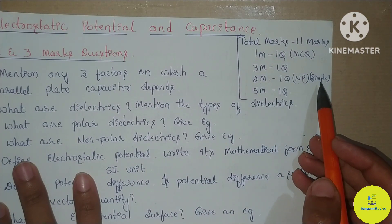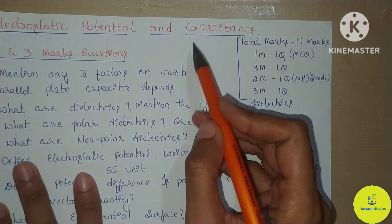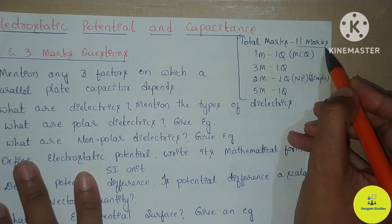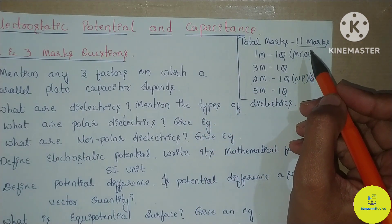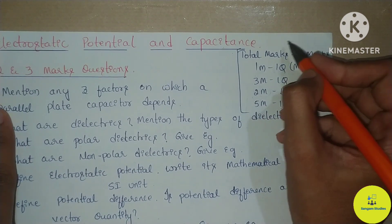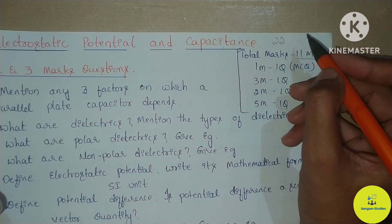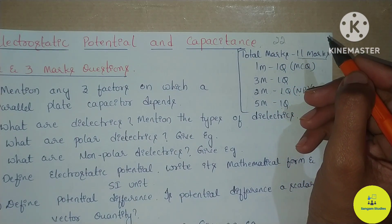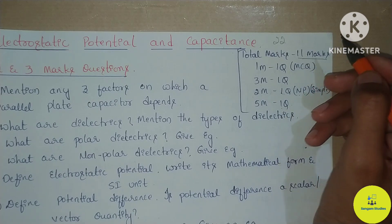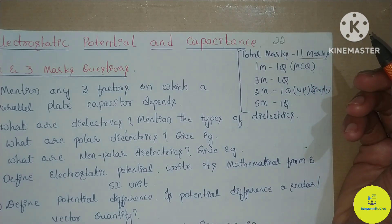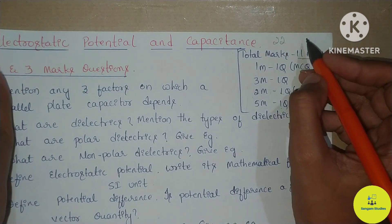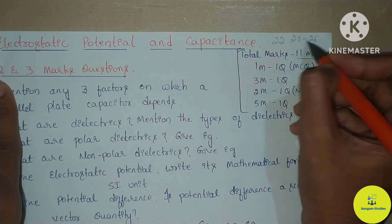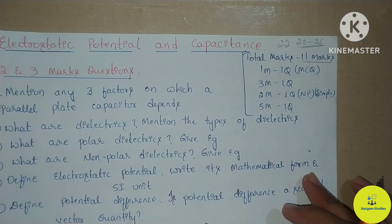According to your final examination, Electrostatic Potential and Capacitance carries a total of 11 marks, and the next unit is 12 marks, making it exactly 22 marks. With a plus or minus 2 to 4 marks variation, you can expect questions worth between 22 and 26 marks from this chapter.